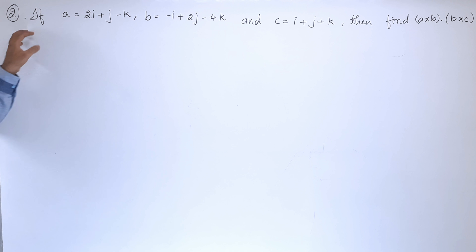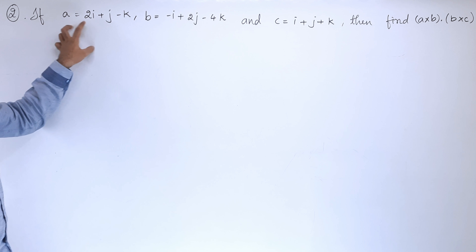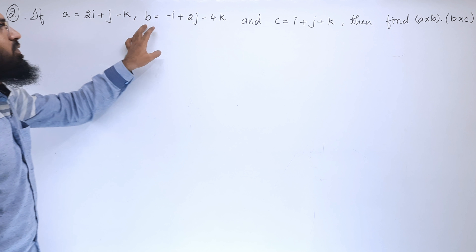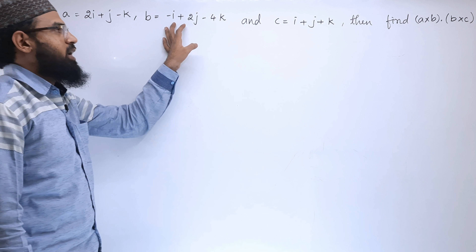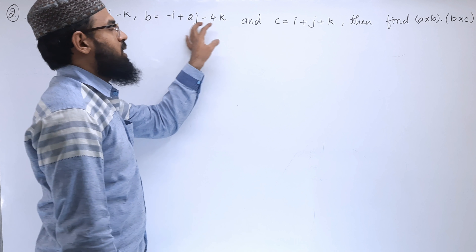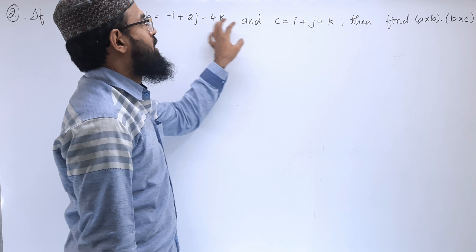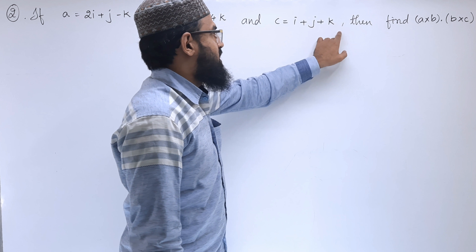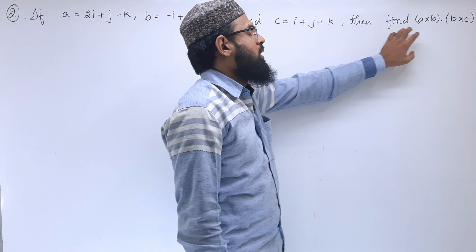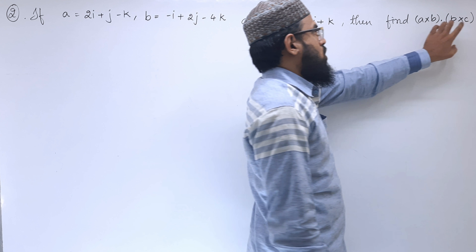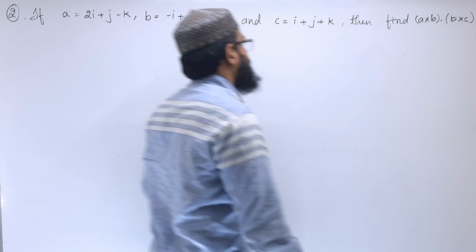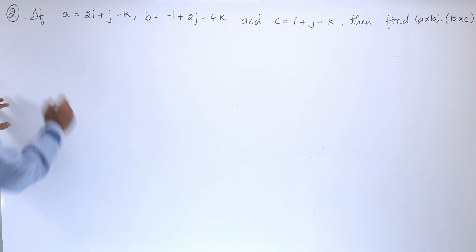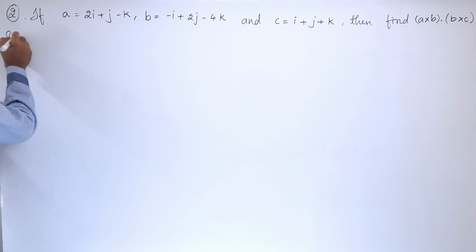Second problem: if vector a equals 2i + j - k, vector b equals -i + 2j - 4k, and vector c equals i + j + k, then find (a × b) · (b × c). Let us write the given vectors in solution.